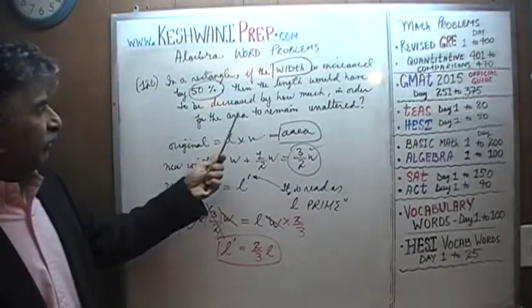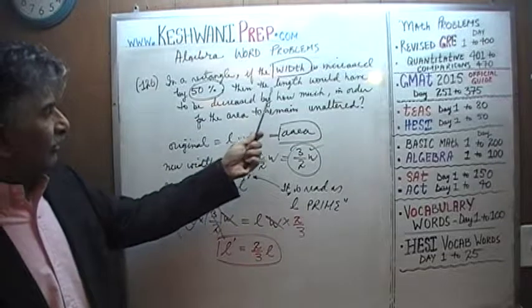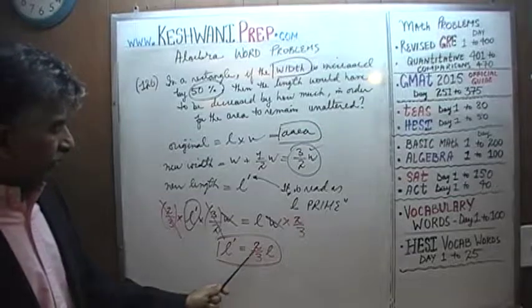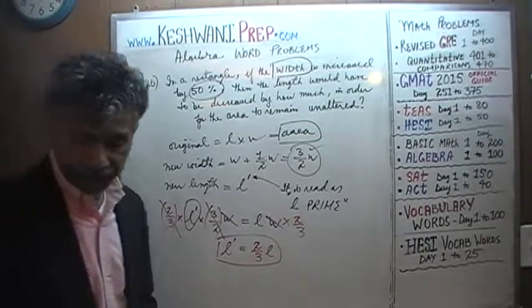So the answer to the question, what does the new length have to be in order for the area to remain unaltered? The answer is the new length needs to be two-thirds of the old length. Bye now.